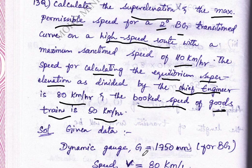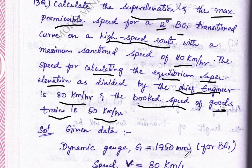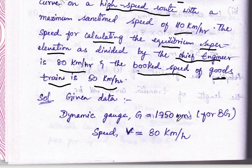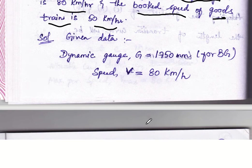Given data: Dynamic gauge G value is 1750 mm which is given for broad gauge, the standard value. Next, speed V equal to 80 km per hour.